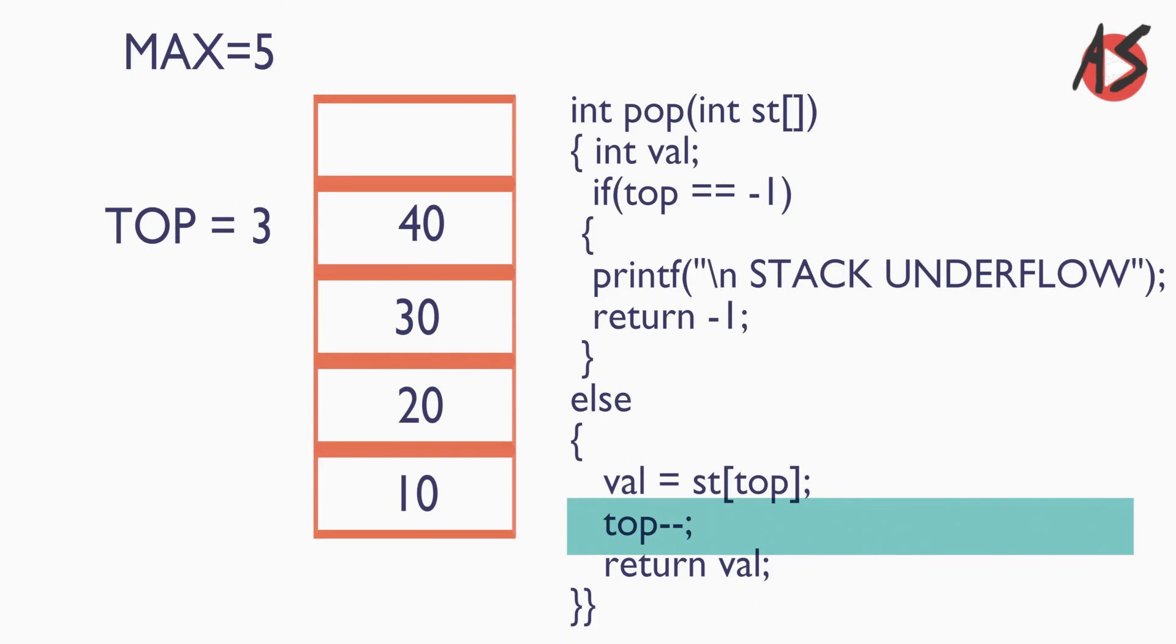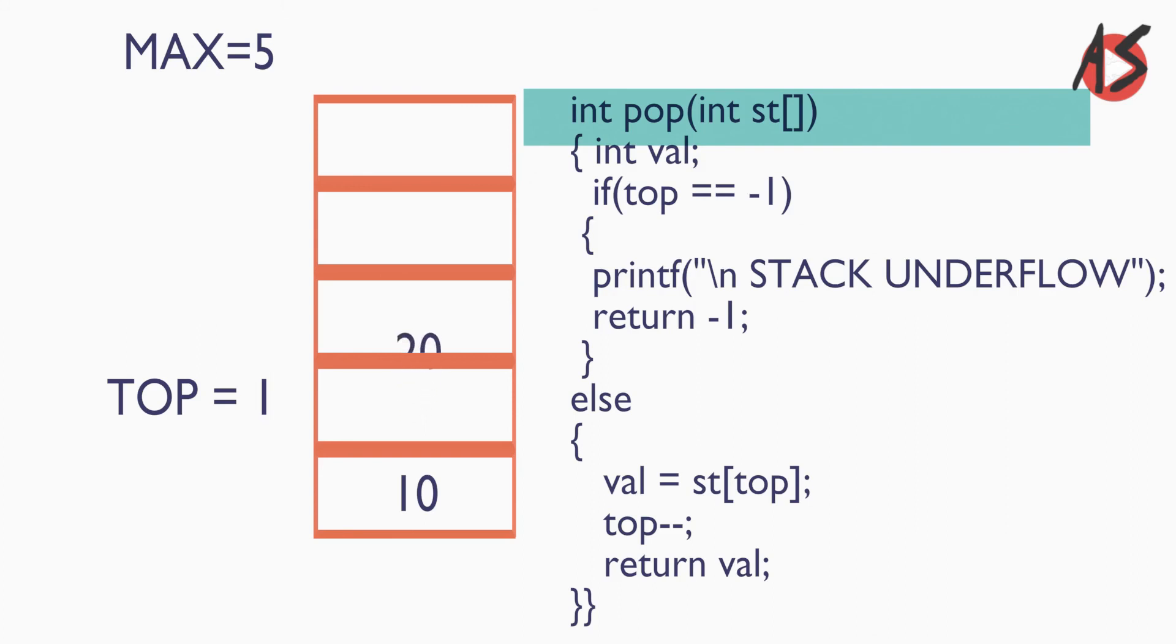Similarly we can pop one more element that is 40 and top is decremented to 2. Similarly we can pop 30, top decremented to 1. Then 20, top decremented to 0. Then 10, and top is decremented to minus 1.